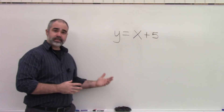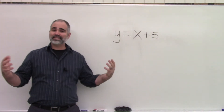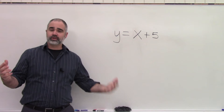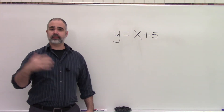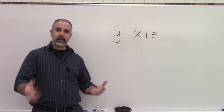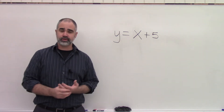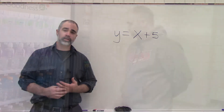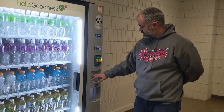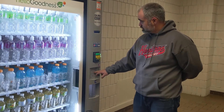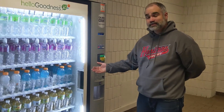With a vending machine, it's easy to tell when it's broken. You push one button and you get a different thing each time — the vending machine is not registering your inputs correctly. So if I were to push C6 and got something else out, this machine would be broken.